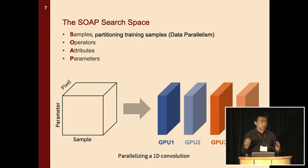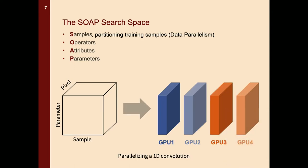The sample dimension considers how to partition your training samples across devices — this has been widely used by data parallelism. The bottom figure shows parallelism in the sample dimension for 1D convolution. The left cube shows computations defined in 1D convolution, with different samples, a parameter dimension indicating different activations within a sample, and a pixel dimension representing computations related to different pixels. Using the sample dimension, you end up assigning different samples to different GPU devices.